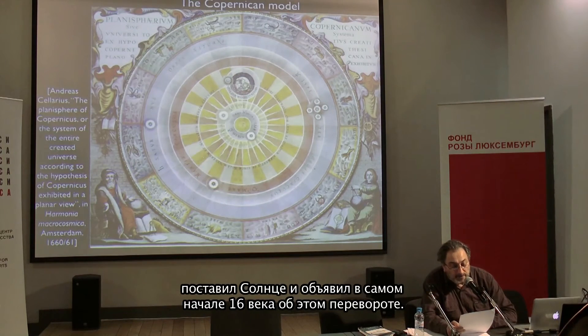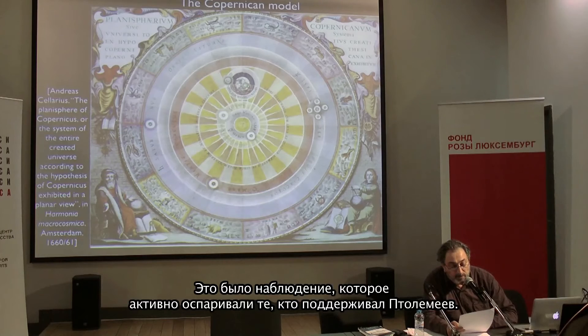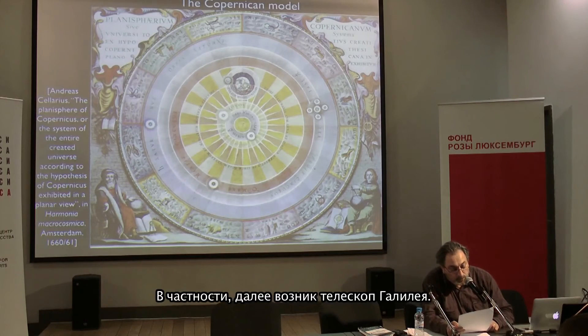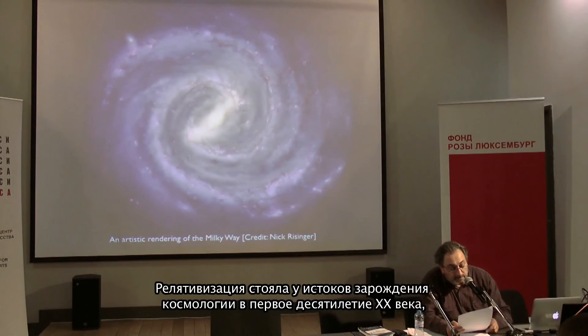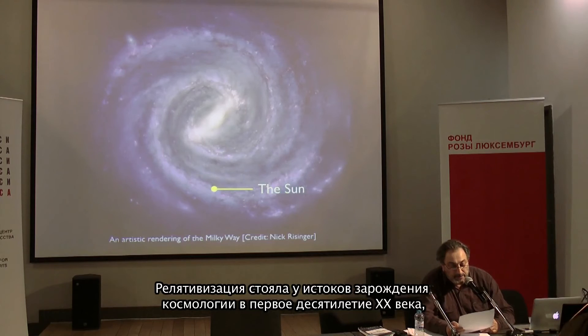Enunciated at the beginning of the 16th century, it was endorsed by observation data collected by Tycho Brahe — who remained a Ptolemaic supporter — and especially by Galileo's telescope. Further relativization occurred at the birth of cosmology in the first decade of the 20th century, when the solar system was inserted into a galaxy, the Milky Way — not really at the center — and the existence of other galaxies was proven. Thanks to astronomers like Slipher, Friedman and Hubble, the idea of an expanding Universe was introduced.